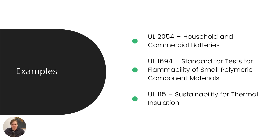There are hundreds, maybe even thousands of UL standards, each applying to specific products. For example: UL 2054, household and commercial batteries; UL 1694, standard for test for flammability of small polymeric component materials — so we have one for materials and one for components. And finally, UL 115, sustainability for thermal insulation. UL standards can be applied to a very diverse range of products, components, and materials.